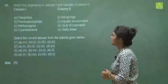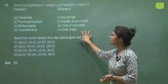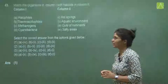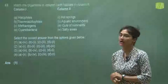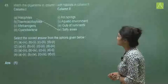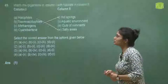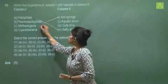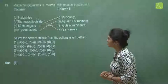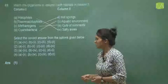Question 49 asks to match organisms in column 1 with habitats in column 2. This is from biological classification and solely NCERT-based. Halophiles live in salty areas, so A matches with 4. Thermoacidophiles live at high temperatures, so B matches with hot springs. Methanogens live in the guts of ruminants, so C matches with 3. Cyanobacteria live in aquatic environments, so D matches with 2. Only one option has A matching with 4, so the answer is option one.